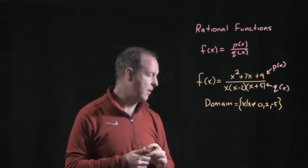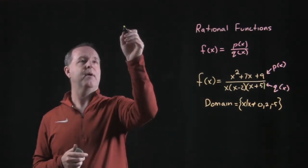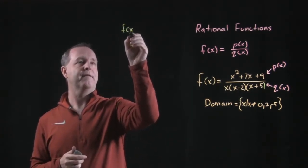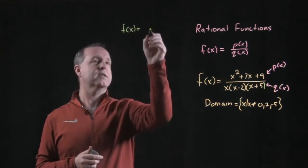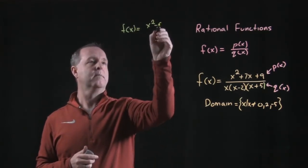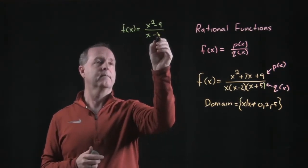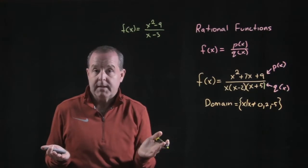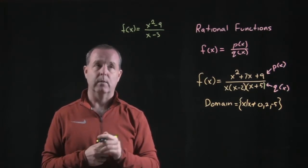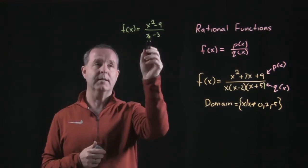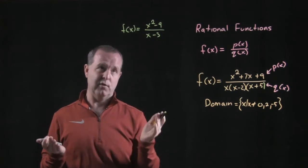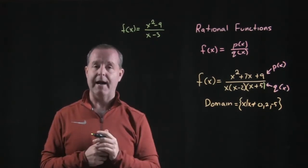A couple of examples we want to look at. Let's say for example, I have some function f of x equals x squared minus 9 over x minus 3. So what would you say its domain is? Well, its domain has to be all numbers except for 3. If 3 was in the domain, we would divide by zero.